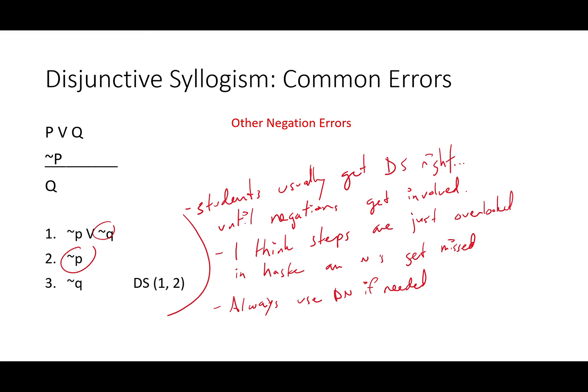Students usually get disjunctive syllogism right without too many problems until negations start getting involved and proofs get pretty long. I think steps get overlooked in haste, so if you're going to use this rule, step back and go slowly. It's a really common rule, and it's a way that human beings really think all the time. So, think slowly when you use it.